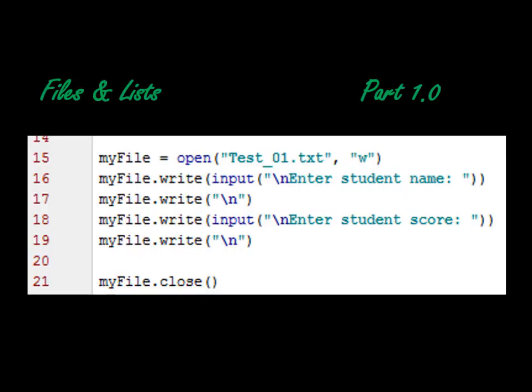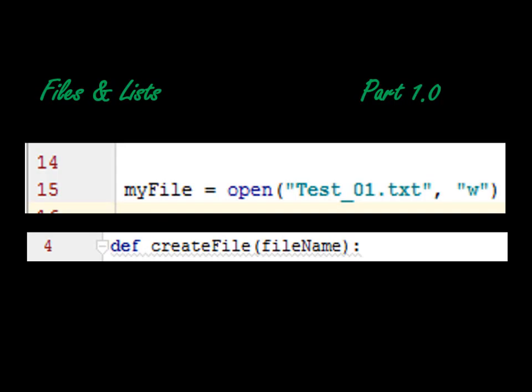Go ahead and test it — enter a student name, enter a score, and once you're done, in your project file menu you should see `test_1.txt`. If you double click on it, it'll open that file and show you the data you just created. So we've got the concept of a file, but we know we've got some problems: we need to loop it, and we need to be able to add data to it without recreating the file, which will erase all the data.